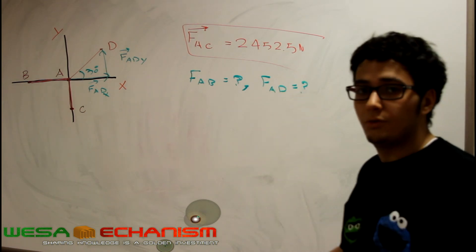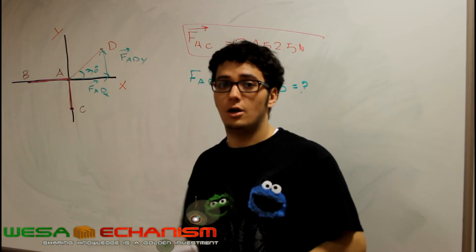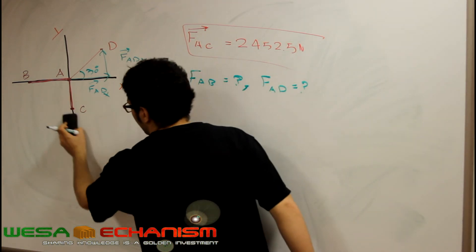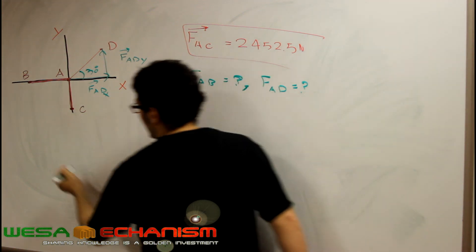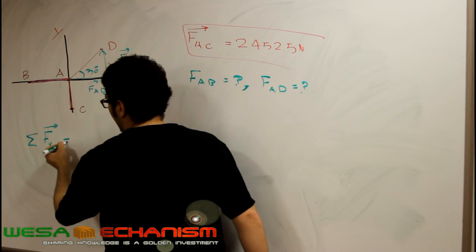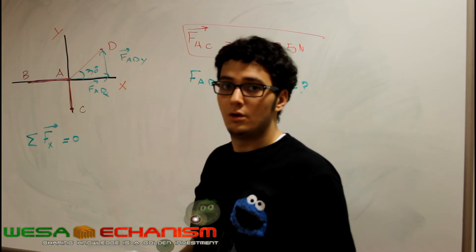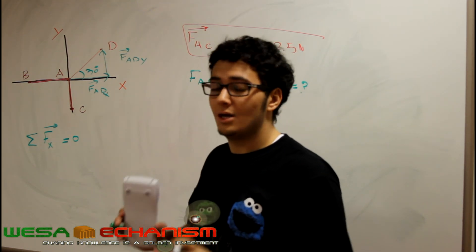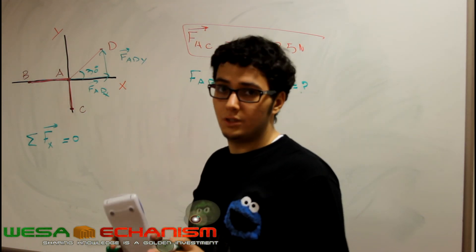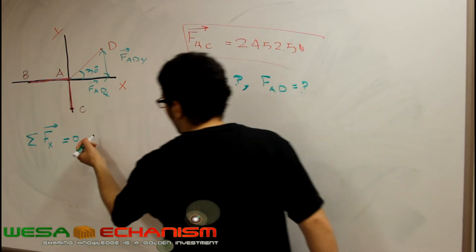So what we are going to do right now is sum the forces of the whole body in the X direction and sum the forces in the Y direction. In any static problem, the sum of the forces equals zero, the sum of the moments equals zero. You cannot put the sum of the forces equal to MA because this is a static class, not a dynamic class. This is what we are going to do.